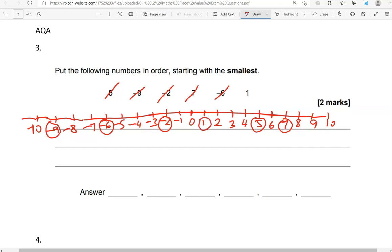So we'll start with the smallest. It should be this way, and they get bigger and bigger as you go this way. So we have negative 9 first, then negative 6, negative 2, 1, 5, and 7.